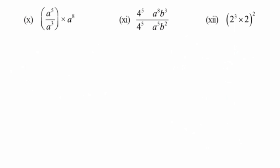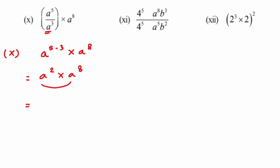Tenth question: solving the bracket part — same base, different powers. Applying the law, we get a to the power 5 minus 3, which is a to the power 2, multiplied by a to the power 8. Now bases are same, doing multiplication, so add the powers: a to the power 2 plus 8, which equals a to the power 10. That's the answer for question 10.